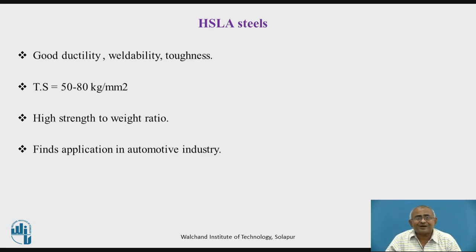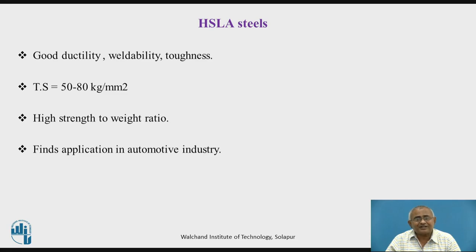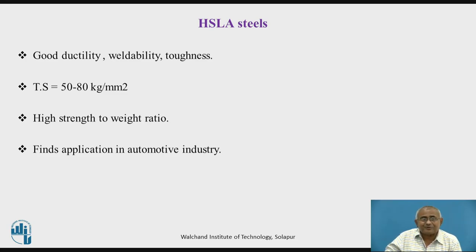Due to that, these steels have good ductility, good weldability, and good toughness due to low carbon. But due to the presence of titanium, niobium, and ultra-fine grain structure, their tensile strength is very high — 50 to 80 kg per mm². Therefore, these steels have a high strength-to-weight ratio, and we find their applications in the manufacture of components in the automotive industry. This steel is forged first and then machined to the required dimensions.